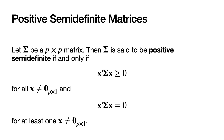Next, let's define what it means for a square matrix to be positive semi-definite. Again, let CAP-SIG be a square matrix of dimension P, so it's P by P. Then CAP-SIG is said to be positive semi-definite if and only if the quadratic form given by X-prime times CAP-SIG times X is greater than or equal to zero — the inequality is non-strict — for all X not equal to the zero vector, and the quadratic form X-prime times CAP-SIG times X is equal to zero for at least one of those X vectors.